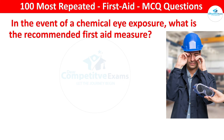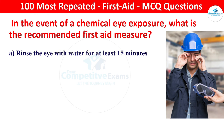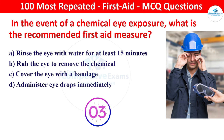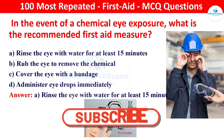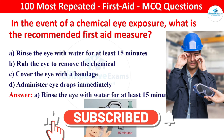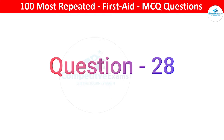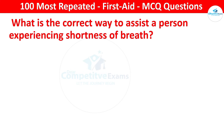Next question: in the event of chemical eye exposure, what is the recommended first aid measure? Your options: rinse the eye with water for at least 15 minutes, rub the eye to remove the chemical, cover the eye with a bandage, or administer eye drops immediately. The right answer is rinse the eye with water for at least 15 minutes. Rinsing the eye helps flush out the chemical and minimize damage.